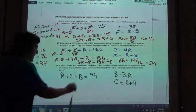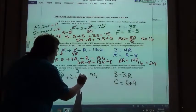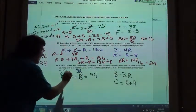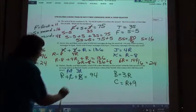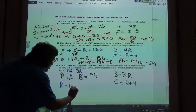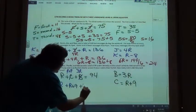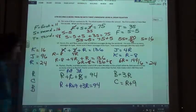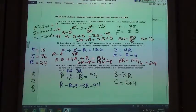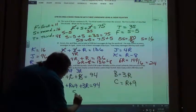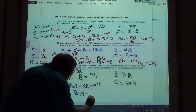So substituting in. In for the B, we're going to have three R. In for the C, we're going to have R plus nine. So R plus R plus nine plus three R equals 94. So combining my like terms on that left side, I'm going to get five R plus nine equals 94.